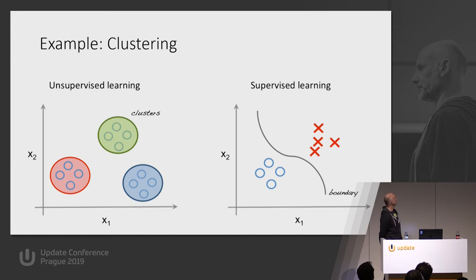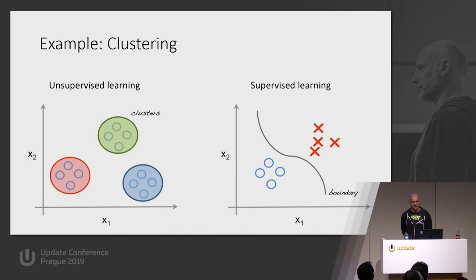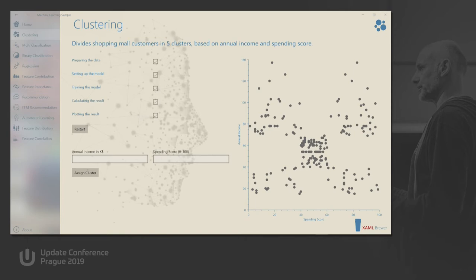A typical scenario for clustering: I am the owner of a shopping mall and I know a lot about my customers — their gender, income, how much they spend, etc. I have a tight marketing budget. I can invite some people to receptions with champagne and caviar, and to others I can send buy-three-pay-two vouchers. Sending the wrong invitation to the wrong person wastes money. A good start is to divide your customers into groups, then dive into the groups to see what they have in common and decide how to target them with different marketing campaigns.